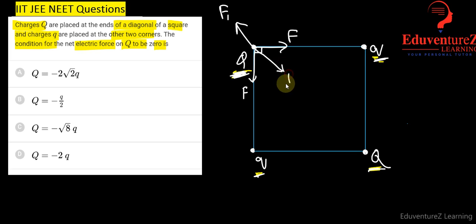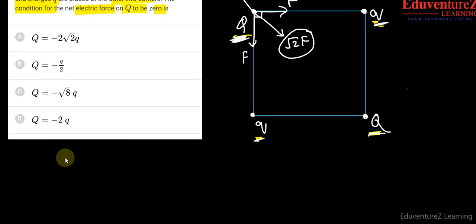So the resultant becomes root under 2F. So if root 2F balances F1, then the net force on capital Q is zero. So F1 should be equal to root under 2F.